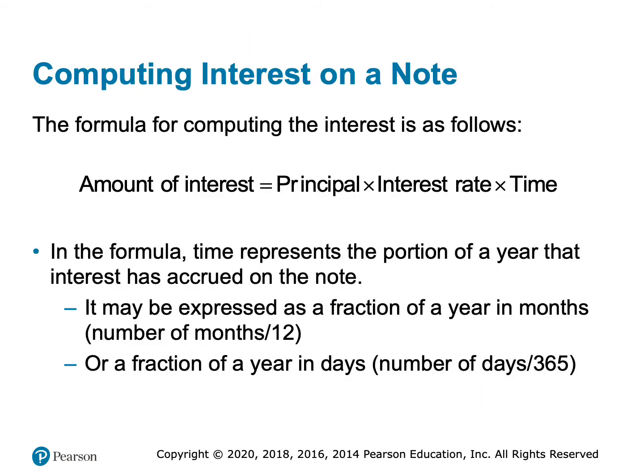To calculate the amount of interest, we take the principal — $1,000 — multiplied by the interest rate, which is 6% (or 0.06 as a decimal), then multiplied by the amount of time. Because the interest rate is an annual rate, time must always be expressed in terms of a year.